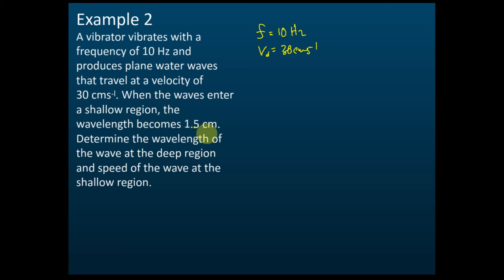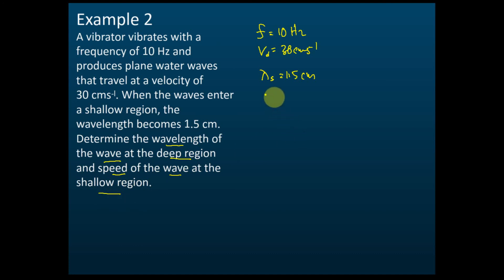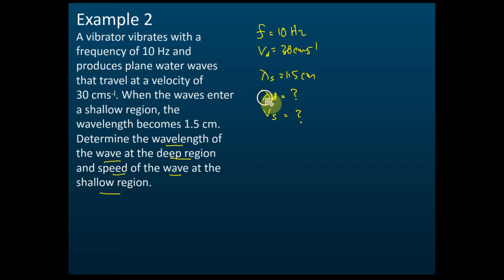This 30 cm/s is at the deeper region, so we use vd. When the wave enters a shallower region, the wavelength becomes 1.5 cm, so lambda at the shallower region equals 1.5 cm. We need to determine the wavelength of the wave at the deeper region and the speed of the wave at the shallower region.